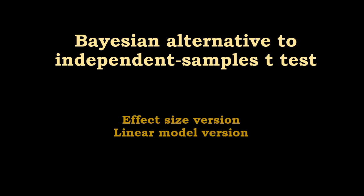We continue with the Bayesian alternatives to t-tests. In this case, I'm going to talk about the Bayesian alternative to the independent samples t-test. I'm going to use two versions. One is the effect size version, which is the same as in the one sample t-test. And I'm going to add a very brief explanation of the linear model version of the Bayesian alternative to independent samples t-test.